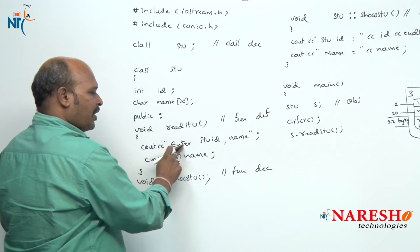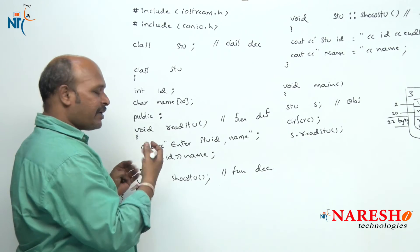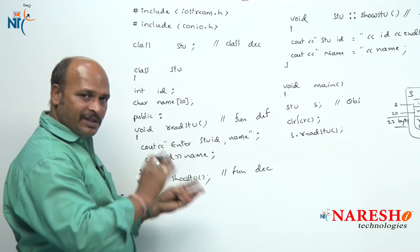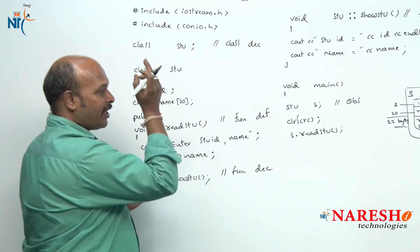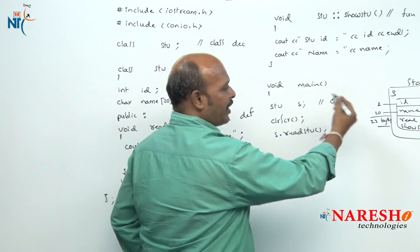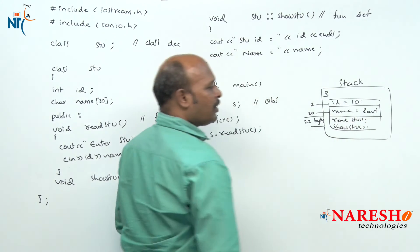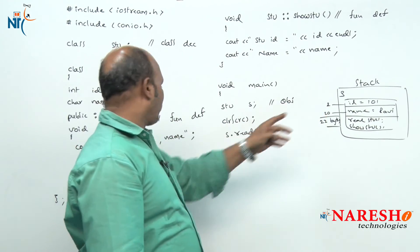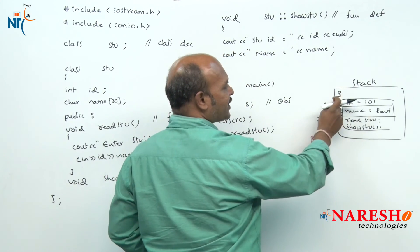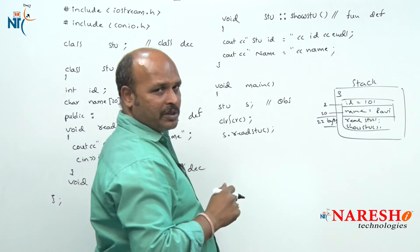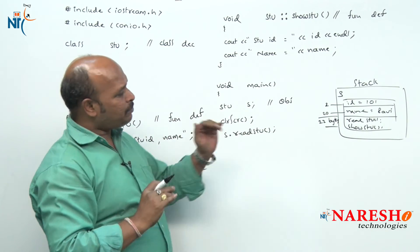From read_student, first cout prints 'enter student id and name'. Then cin — which is like scanf — waits for input. The user enters values, which are stored in id and name. For example, 101 and Ravi are entered; those values are stored inside the id and name fields within the s object. s.read_student is now completed — input process is done.